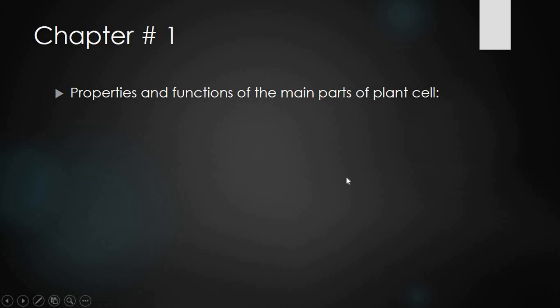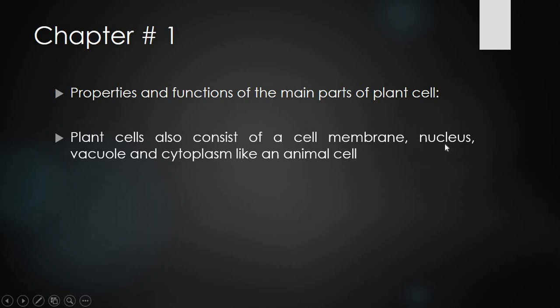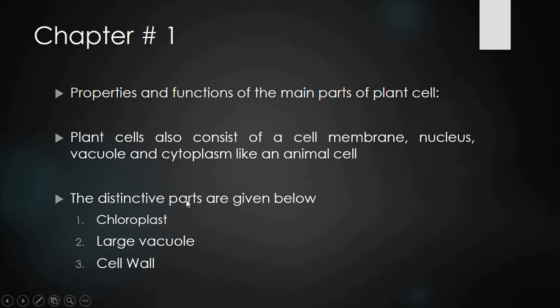Now let us talk about the plant cell. Plant cells and animal cells are different, as I mentioned before, but some things are similar between them — such as cell membrane, nucleus, vacuole, and cytoplasm. These were present in animal cells and are also present in plant cells. The distinctive parts of plant cells are chloroplast, large vacuole, and cell wall.